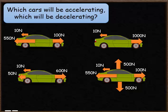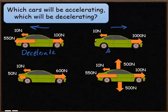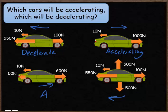For the first car, the resultant force is going backwards, which means the car is going to be decelerating — getting slower. For the second car, the resultant force is going forwards, so it's gaining speed and will be accelerating. For the third car, the resultant force is going forwards, meaning it's also accelerating. For the fourth car, the resultant force opposes its motion, so that one will be decelerating, getting slower.